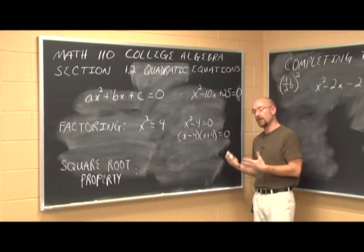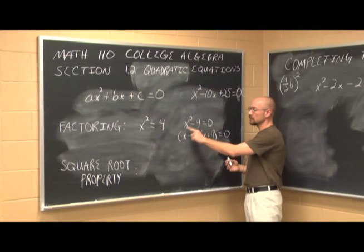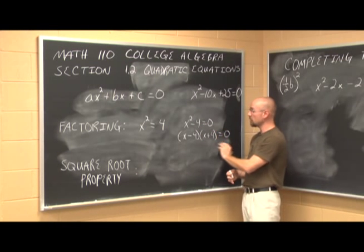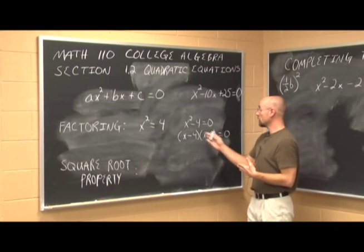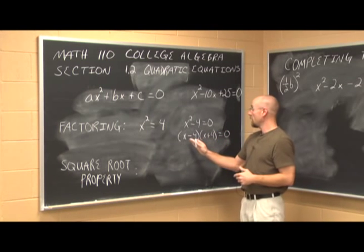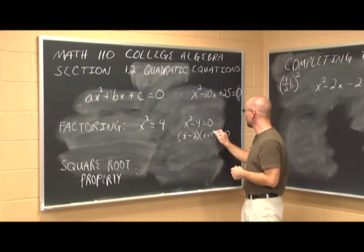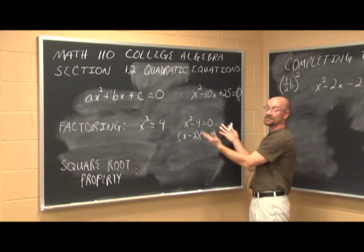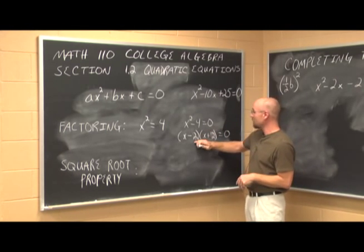Now we can use the zero factor theorem — zero times anything is 0. My camera operator just notified me that I didn't take the square root of that value. That's how we factor — even instructors make mistakes, so watch out for that.